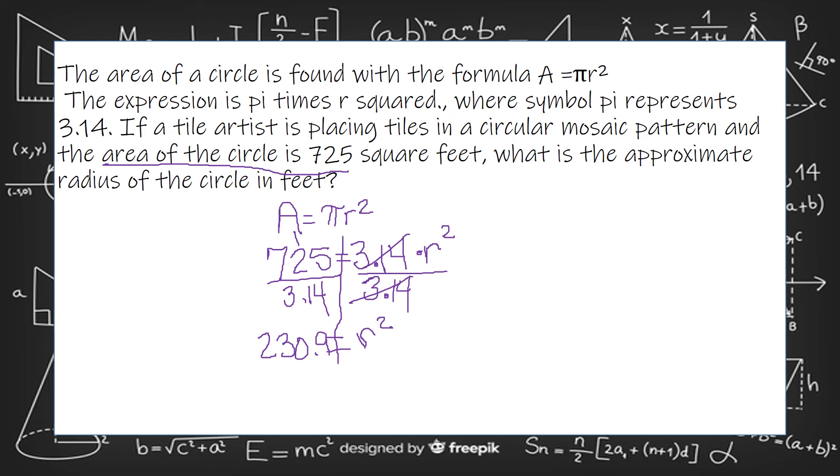So since I did it to the right side of the equation, I also have to do it to the left. I'm left with r squared because 3.14 divided by 3.14 just leaves us with 1. And I'm going to type.